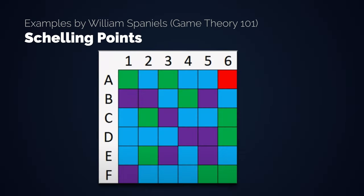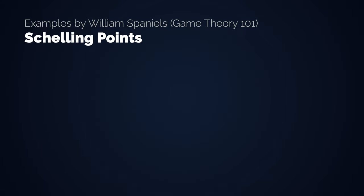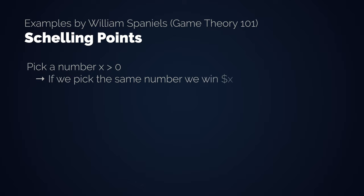First example: pick a square. If we pick the same one, we win. The obvious and therefore winning choice is A6 — due to its color, it's the most salient one. Second example: pick a number greater than zero. If we both pick the same number, we win the amount of dollars of that number. Most people intuitively pick one million. You don't just want to win ten bucks, and a million is a status number — becoming a millionaire is a salient choice.